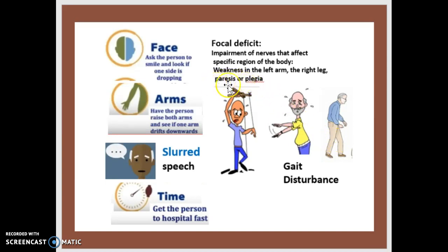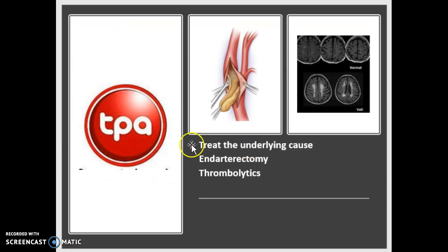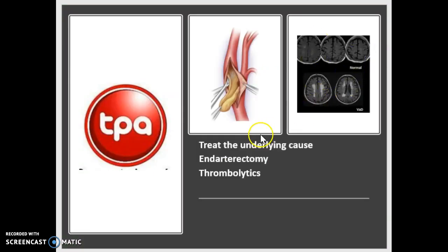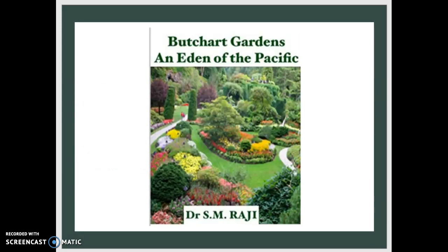For treatment, you want an MRI to look for hyperintensity. You then want to treat the underlying cause with either endarterectomy, thrombolytics, or tPA. That about sums up this episode of Medicine in Three Minutes.